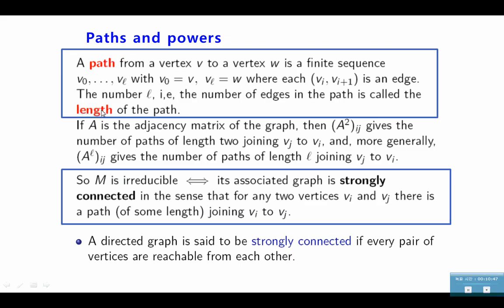The adjacency matrix A of the graph VE, is the n by n matrix, with Aij equal to 1 if the vertex is in E and 0 otherwise. So, from this graph, we can define an adjacency matrix. Path and length. A path from a vertex V to a vertex W is a finite sequence, where each Vi plus 1 is an edge. The number L, that is, the number of edges in the path is called the length of the path. In the graph, you will find the edges, and you will find the path, and the length is the number of edges in the path.